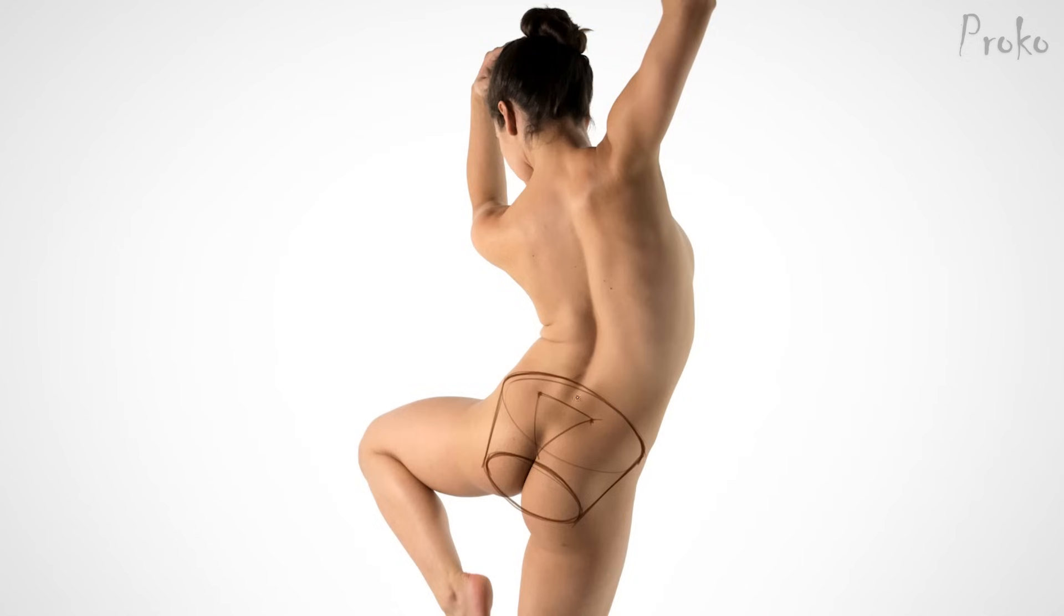This is very much like the anatomy tracing assignment we did earlier in the course. Except this time, instead of analyzing the surface anatomy, we will be finding the skeletal structure underneath all the surface anatomy. So, in exercise one, you got familiar with the shapes and the relationships of the spine and the three major masses.